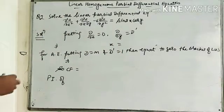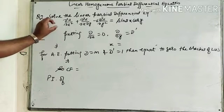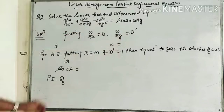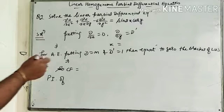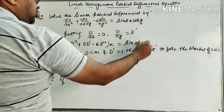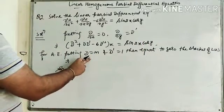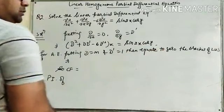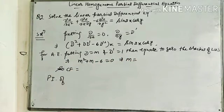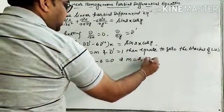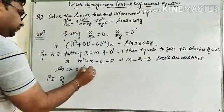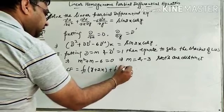Now we discuss another problem — the second question: Solve ∂²z/∂x² + ∂²z/∂x∂y − 6·∂²z/∂y² = sin(2x)·cos(y). Putting ∂/∂x = D and ∂/∂y = D', we get (D² + DD' − 6D'²)z = sin(2x)cos(y). For the auxiliary equation, put D = m, D' = 1: m² + m − 6 = 0, giving roots m = 2 and m = −3 (distinct). So CF = f₁(y + 2x) + f₂(y − 3x).